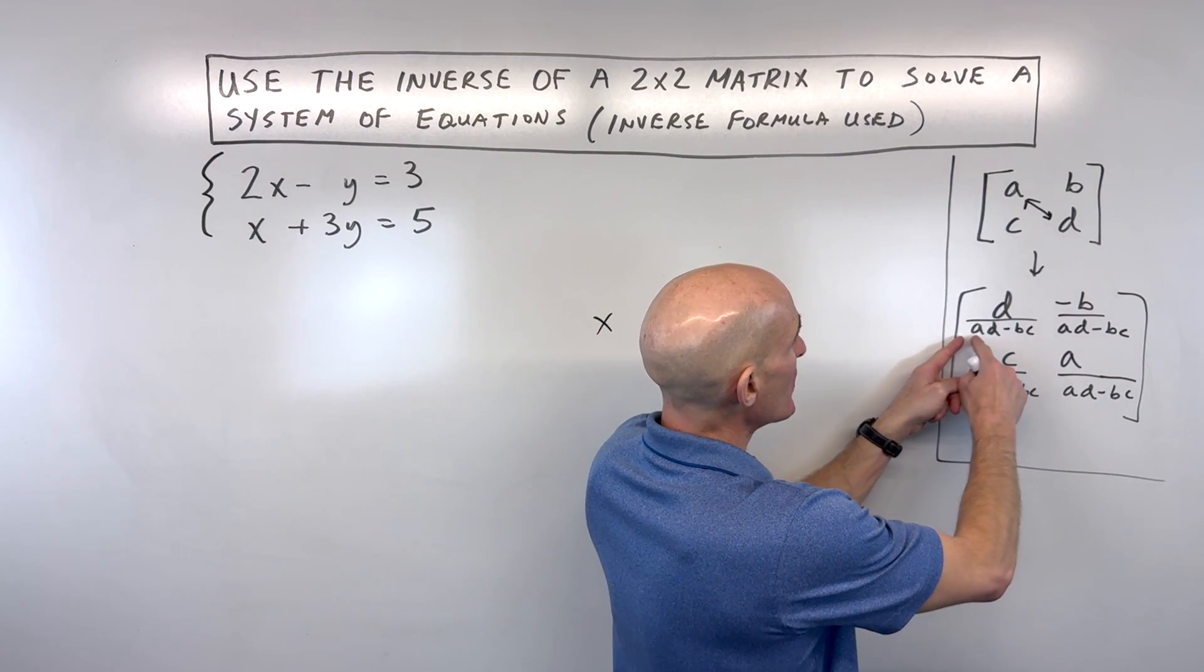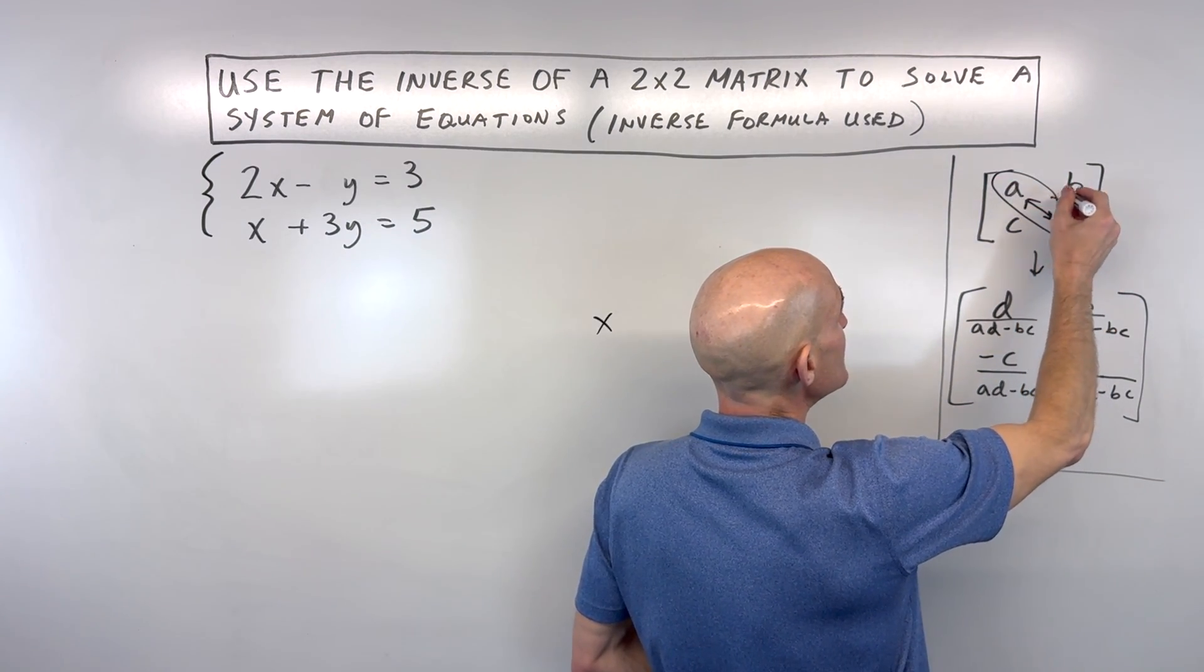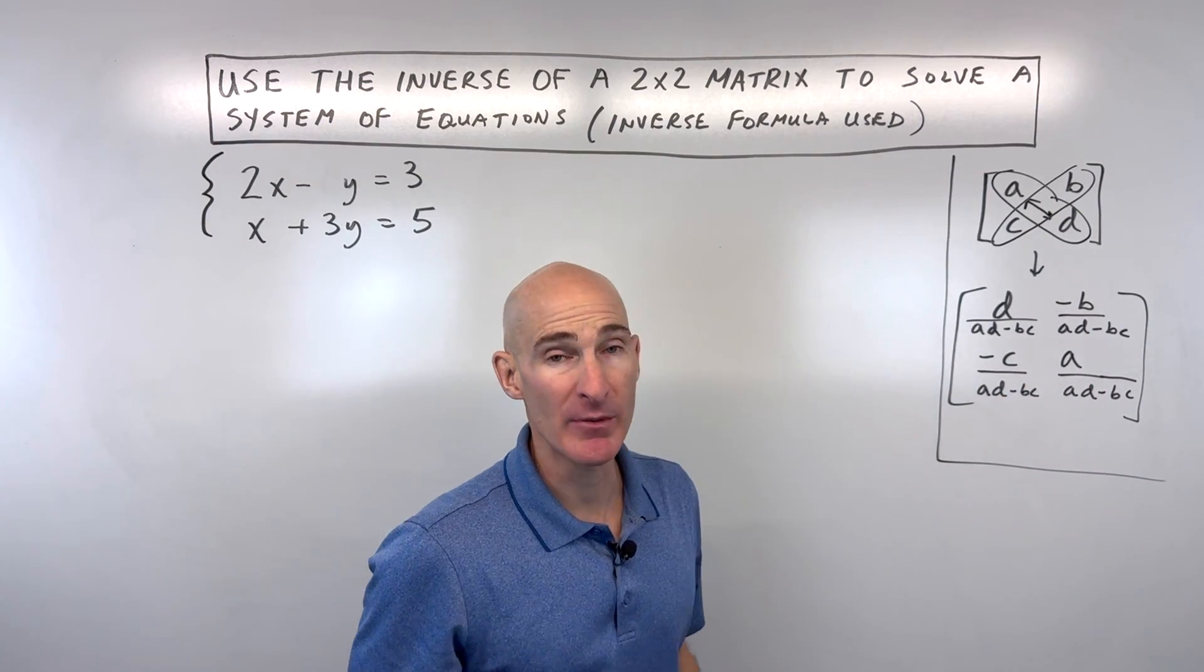And then what you're going to want to do is you want to divide by the determinant. The determinant is this product, A, D, minus this product, B, C, and that's what you're dividing each of those elements by. So I'll show you how this works.